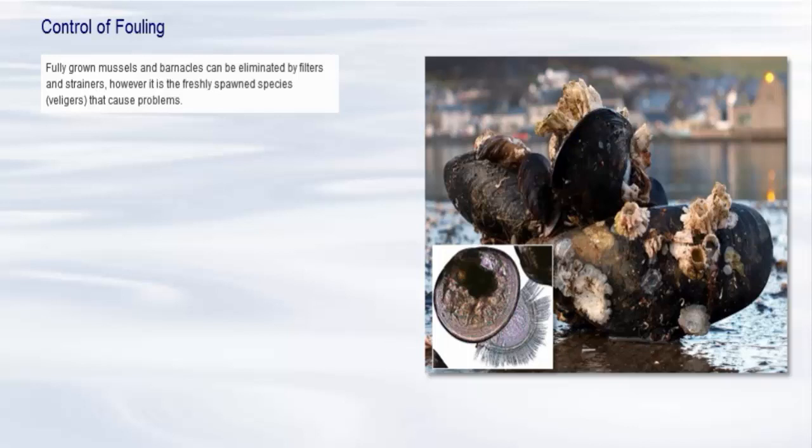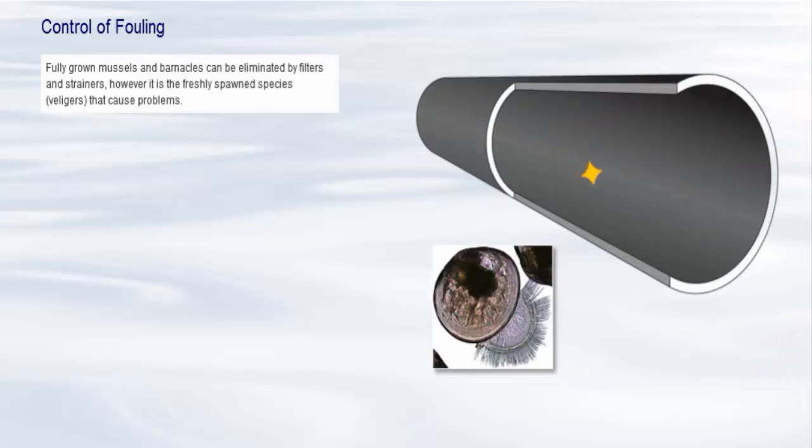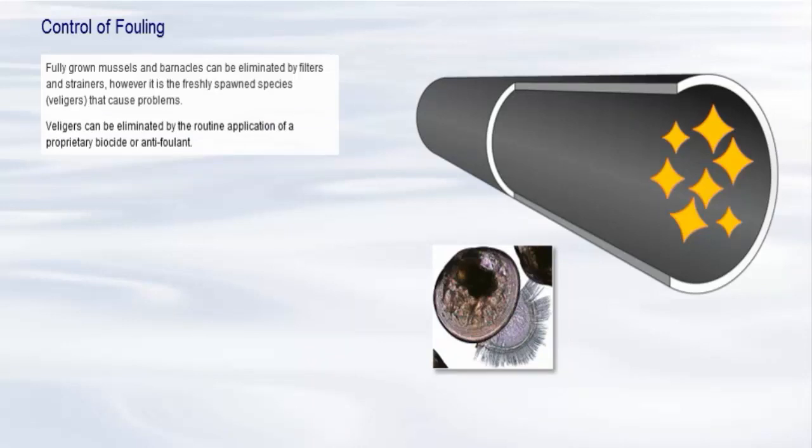These veligers start life in a microscopic size and can easily find their way into the cooling circuit. Once in the system pipework, they attach themselves to surfaces using strong elastic threads of protein. Once attached, they can readily feed and grow, and as their size and numbers increase, fouling and blockage of waterways takes place. The best approach is to eliminate the mussels and barnacles when they are in their most vulnerable state, as veligers, and prevent them from attaching and growing. This can be accomplished by the routine application of a proprietary biocide or antifoulant.